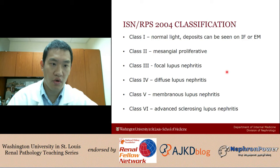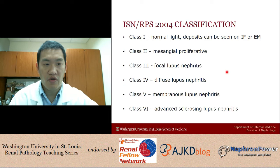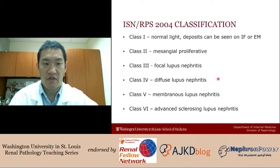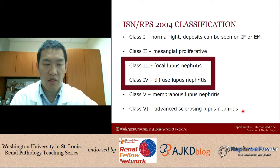Then in 2004 came the ISN and RPS classification. If you just look at it, you'll say it's not much different — they still have class 1 being normal, class 2 being mesangial, class 3 being focal, 4 being diffuse, 5 being membranous, and 6 being advanced chronic disease. But if you actually take a close look at classes 3 and 4, this ISN and RPS classification made a big difference in the way we classify some forms of lupus.